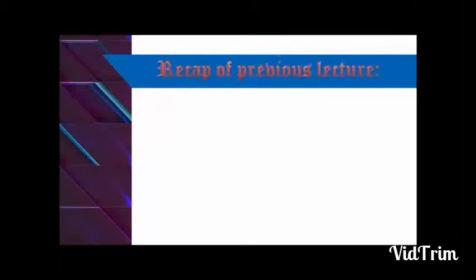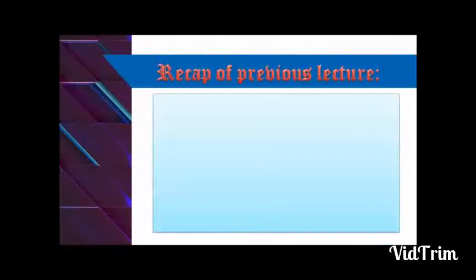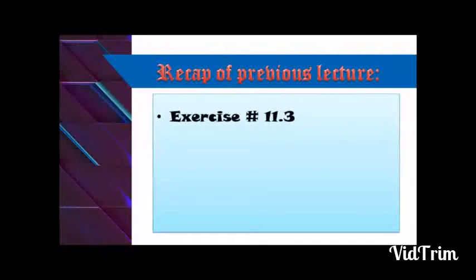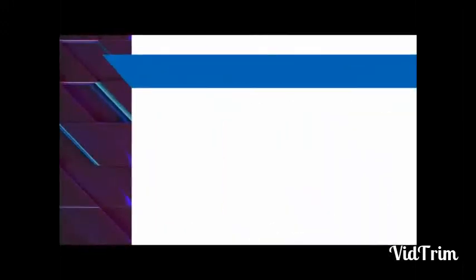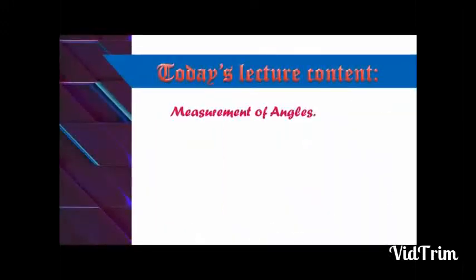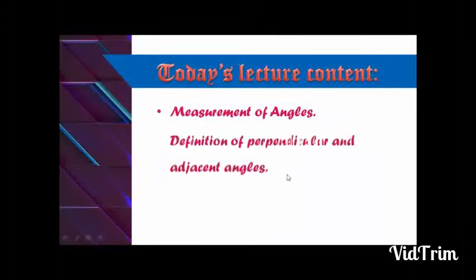Let's quickly revise what we have learned so far. In the previous lecture, we done some questions from Exercise 11.3, and we also learned the definitions of angles and their kinds. Today we are going to learn how to measure angles, then the definitions of perpendicular and adjacent angles, and finally vertical angles — three topics in total.